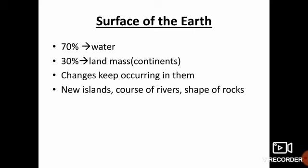Today we are going to see about the surface of the Earth. About 70% of the Earth's surface is covered with water. The remaining 30% is covered with 7 huge landmasses called continents. But these landmasses and water bodies are not untouched by changes. Changes keep occurring in them over a period of time.